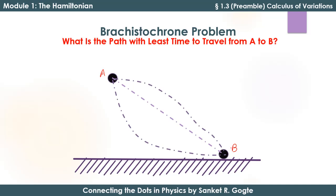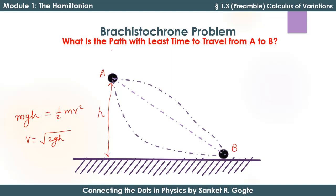Why? Because the body is moving under the influence of gravity, and gravitational energy is being converted to kinetic energy. Since point A is at the same height, no matter which path is taken, the same gravitational energy is converted to kinetic energy. Using mgh = ½mv², we get v = √(2gh), where h is the height of point A. So the velocity at point B is the same for all paths, but the time taken to travel from point A to point B differs — and finding the path of least time is essentially the Brachistochrone problem.